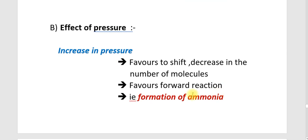In summary for the Haber process: if we increase pressure, we will favour the formation of ammonia, as it proceeds toward the side with a decrease in number of molecules — the forward reaction producing ammonia.